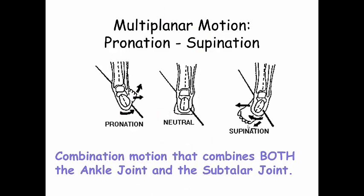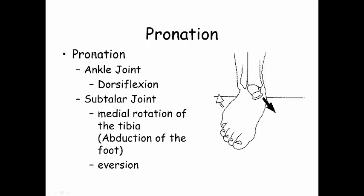Why are these important? They're important for the motions pronation and supination, and we will see these motions again up in the radioulnar joint. For those of you who are runners, you've probably heard of pronation and motion control shoes — it's a huge business. Pronation and supination are combination motions, and they occur both at the ankle joint and the subtalar joint. Pronation: at the ankle joint you have dorsiflexion; at the subtalar joint you have medial rotation of the tibia, which looks like abduction of the foot, and eversion of the subtalar joint. So: dorsiflexion, abduction, eversion.